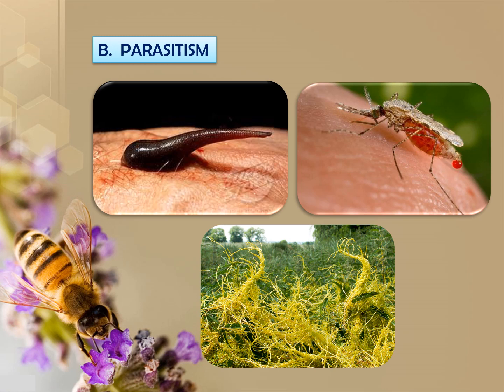Parasitism means only one taxon gets benefited. Examples include leech, mosquito, and Cuscuta reflexa.